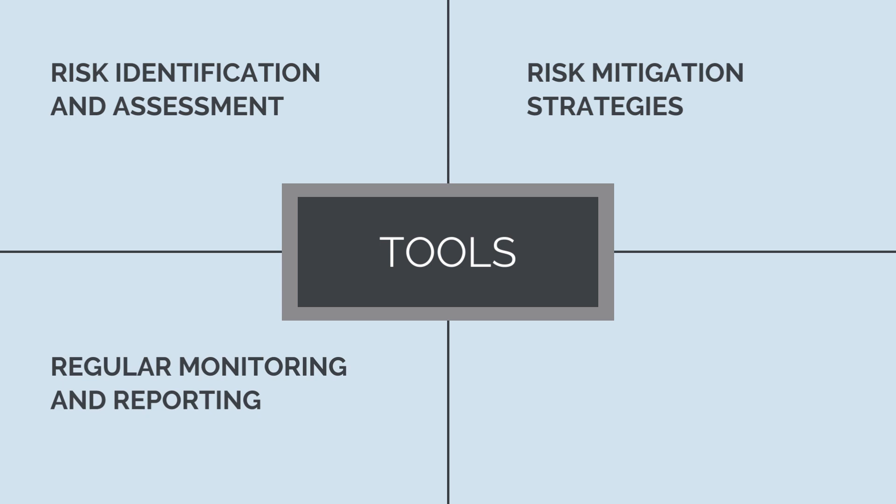Regular monitoring and reporting involves continuously monitoring and tracking identified risks, assessing their impact and likelihood throughout the project. Regular reporting helps stakeholders stay informed and make informed decisions. An effective change management process can help identify and manage risks associated with scope changes, design modifications and unforeseen circumstances.